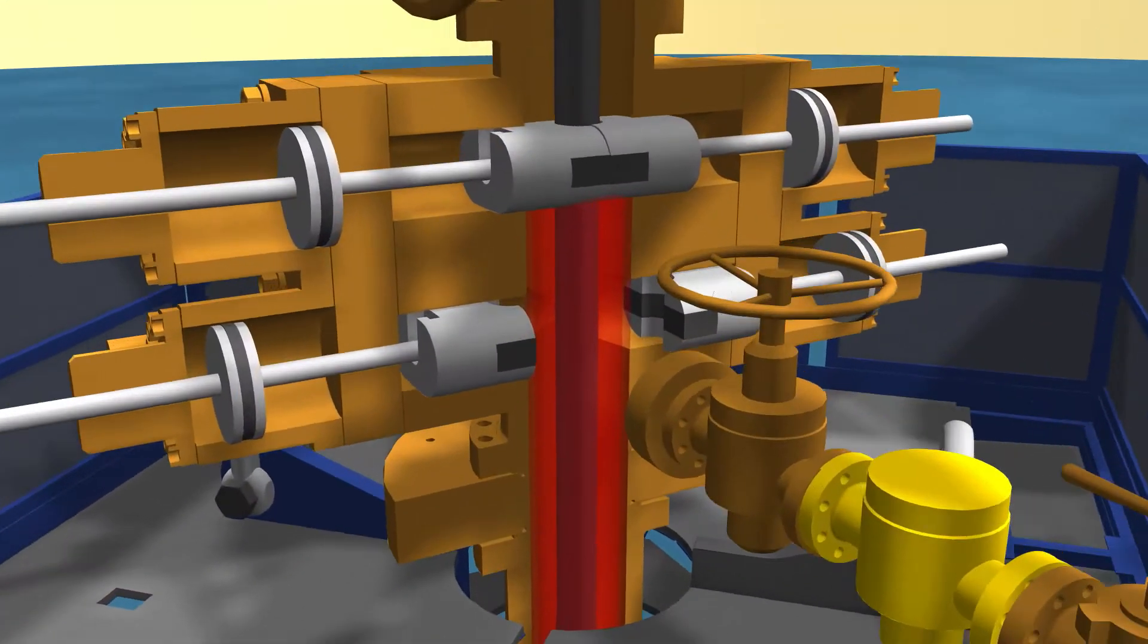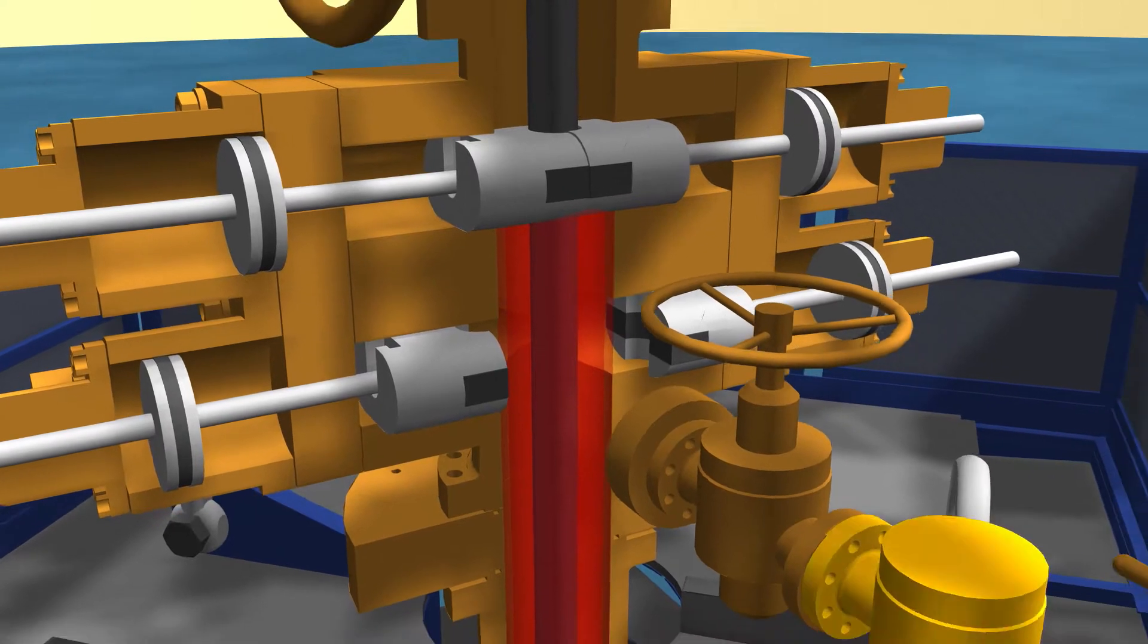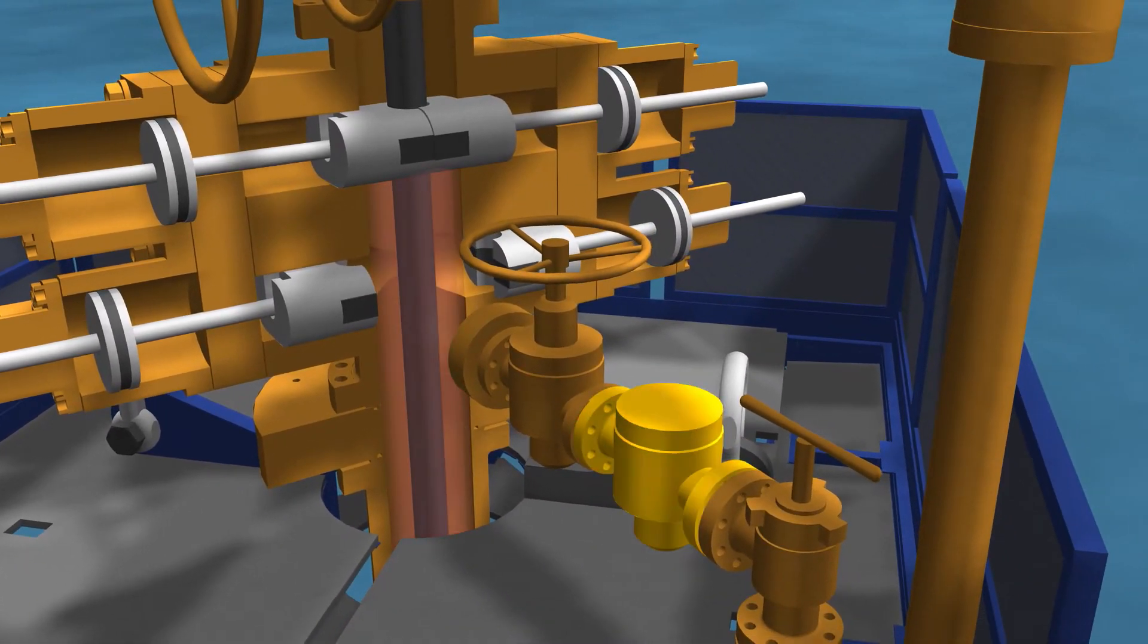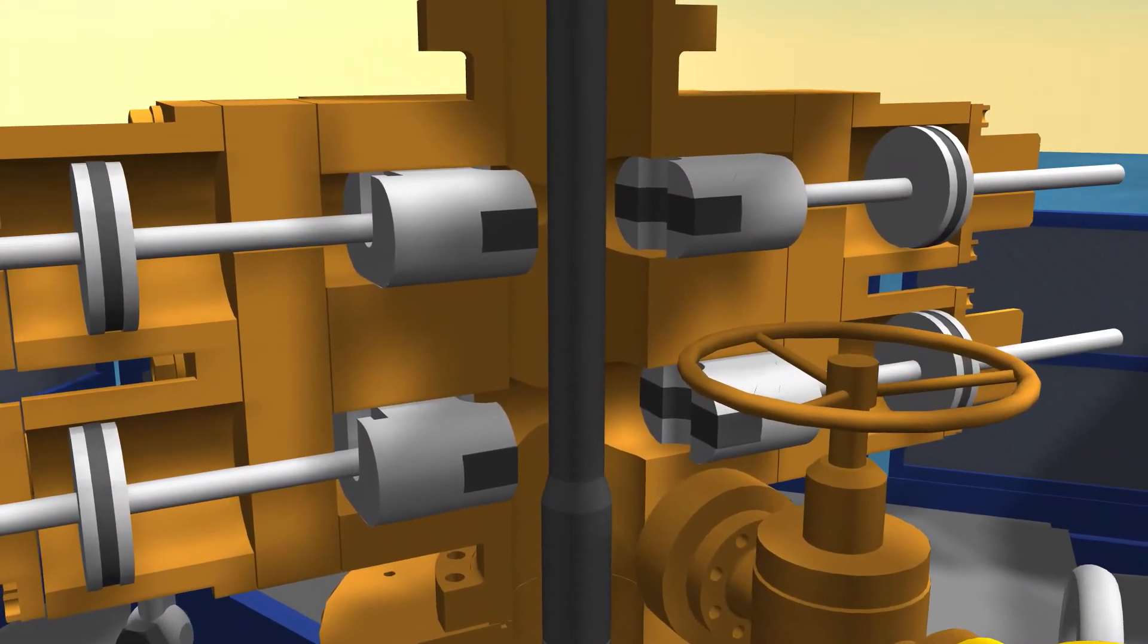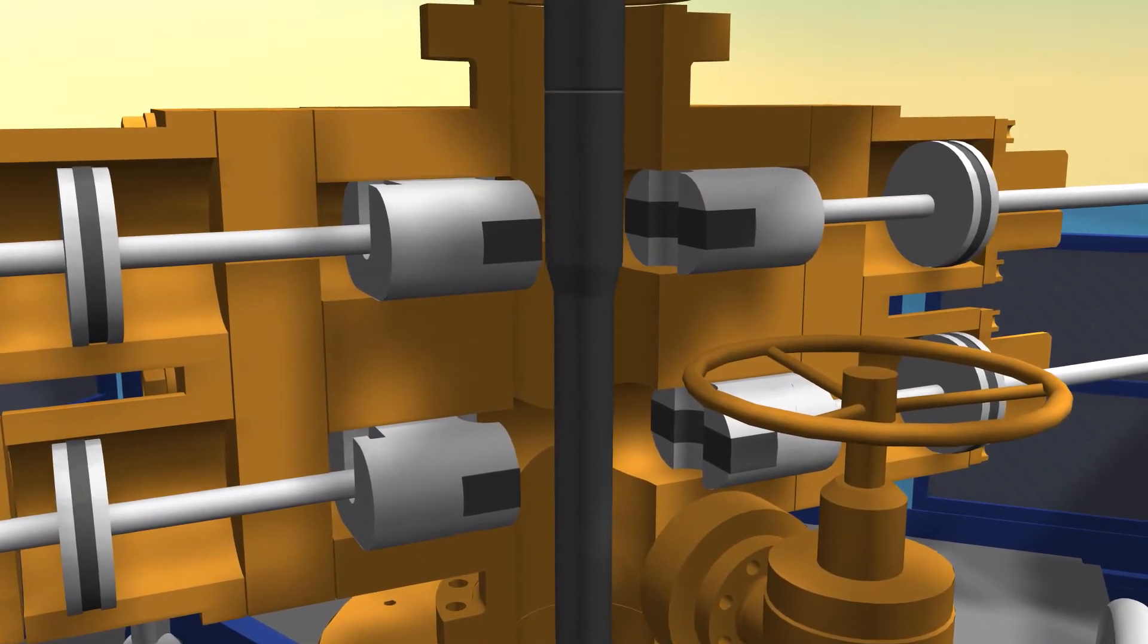Pressure between the upper and lower stripper BOP is released by opening a remote-controlled bleed-off valve. The upper BOP is opened and the tool joint can be pulled out of the well.